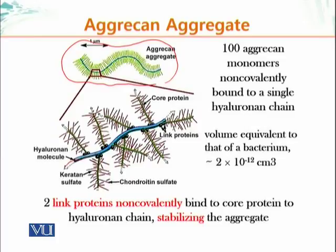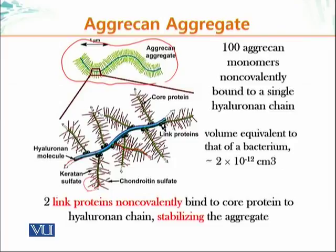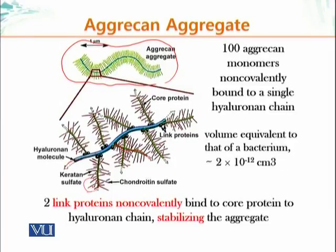The green thread shown here is a core protein, and this protein is attached to keratan sulfate or chondroitin sulfate. About 100 molecules of these particular carbohydrates are attached to aggrecan. The linkage of core protein to hyaluronic acid is not through a covalent bond — it is mediated by link proteins. These link proteins bind the aggrecan molecule using non-covalent forces, holding it in place without the need of a covalent bond.